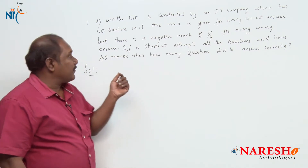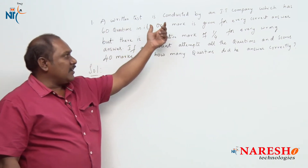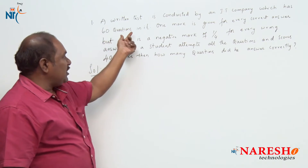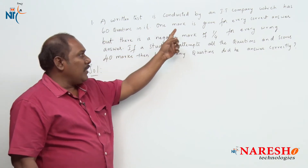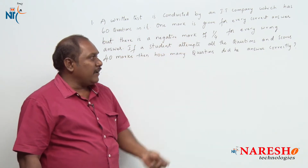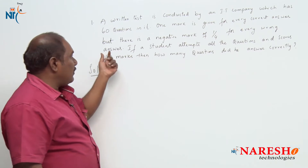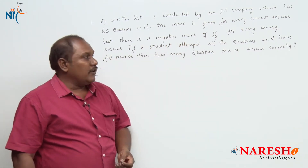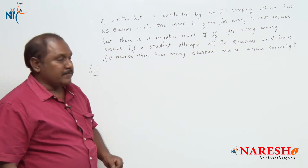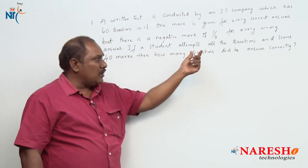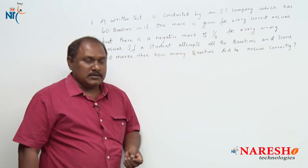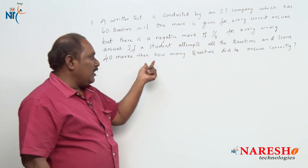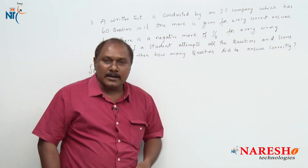The first question: a written test is conducted by an IT company which has 60 questions in it. One mark is given for every correct answer, but there is a negative mark of 1/4 for every wrong answer. If a student attempts all the questions and scores 40 marks, then how many questions did he answer correctly?